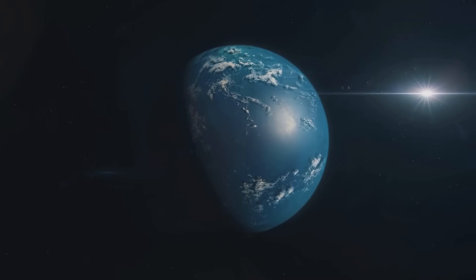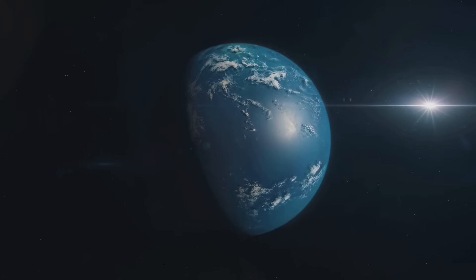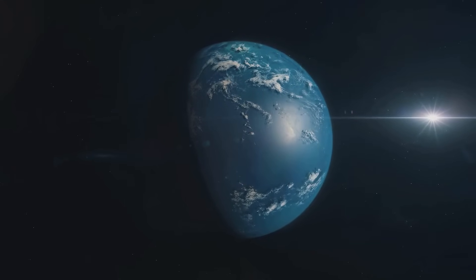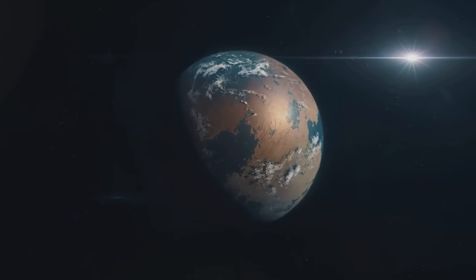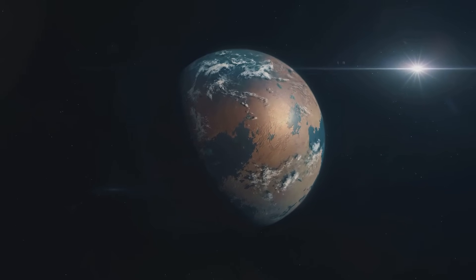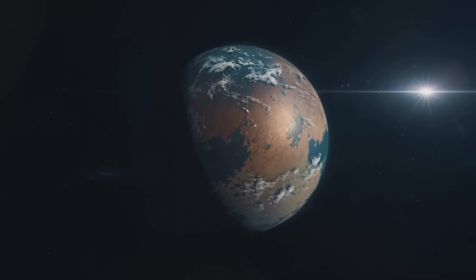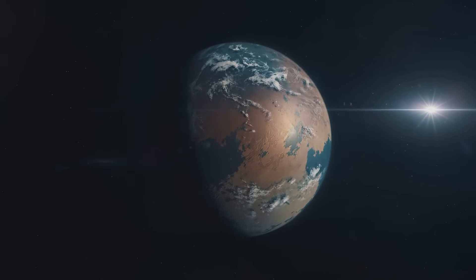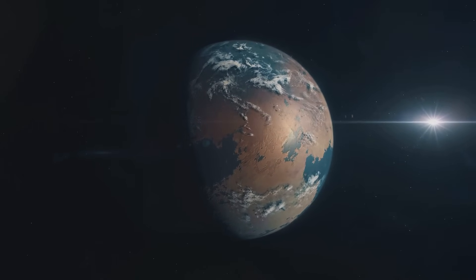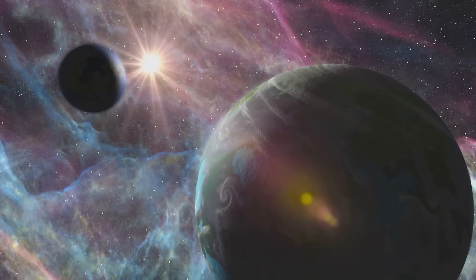These planets share similar characteristics that make them potentially habitable. They're all located in the habitable zone of their star, a region where conditions could be just right for liquid water. They're all roughly Earth-sized, meaning their gravity could be similar to Earth's. And they all receive a certain amount of energy from their star, enough to potentially support life.